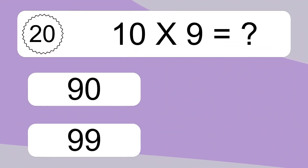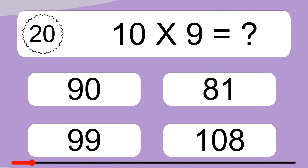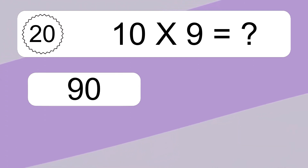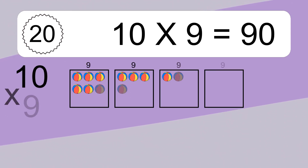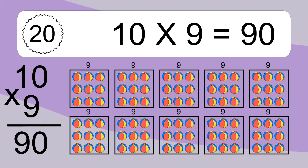10 times 9 equals what? 10 times 9 equals 90. We have 10 boxes, and each box has 9 colorful balls inside. If you count all the balls in all the boxes together, you will have 10 times 9 balls. This equals 90 balls.